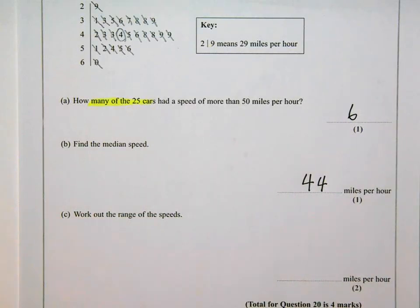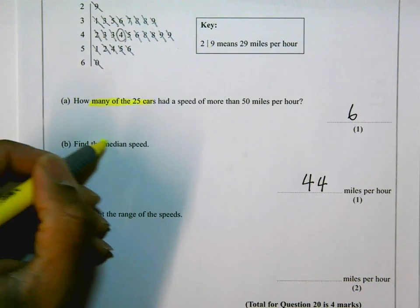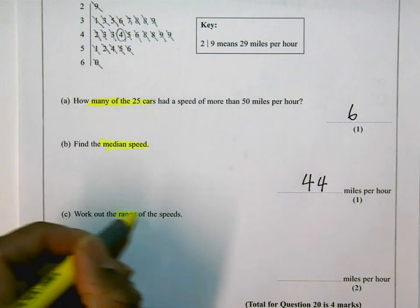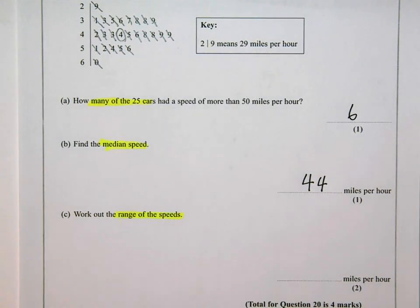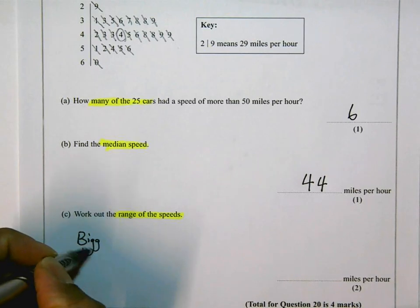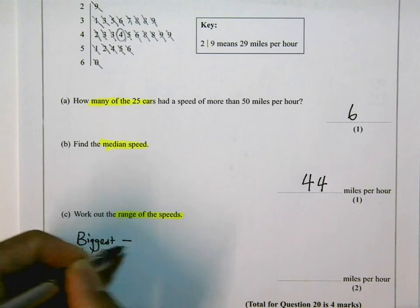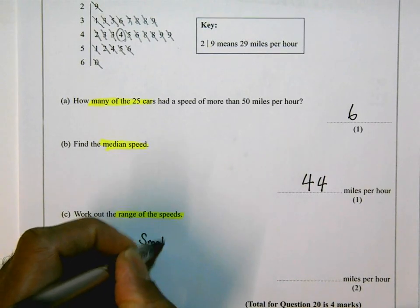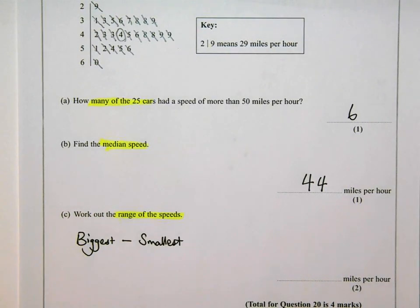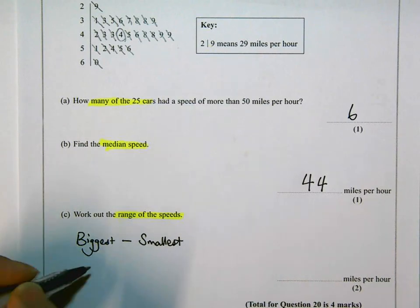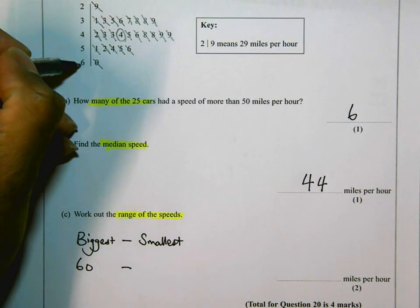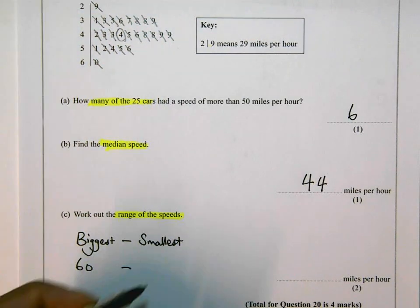Range, which is the last thing. I should have highlighted median when we read that question. But the range is what they want us to work out in part C. The range is the biggest value take away the smallest value. You should remember this. Make sure you do get it. The biggest value is 60. This one here at the bottom. And the smallest is 29. So 60 take away 29 is 31.